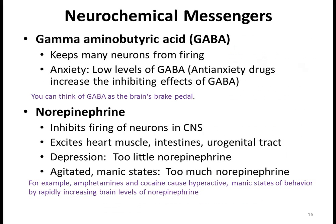GABA keeps many neurons from firing — it inhibits neuronal firing. Low levels of GABA are related to anxiety disorders. Different medications are targeting this; for example, gabapentin (Neurontin) is used for pain management but is also being explored to reduce anxiety by inhibiting or blocking the effects of GABA.